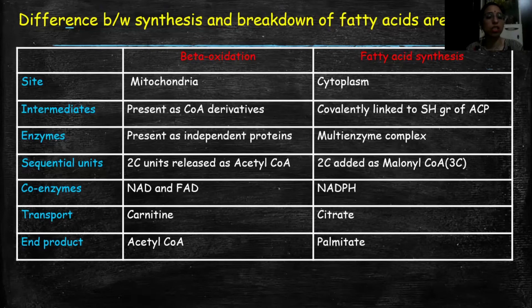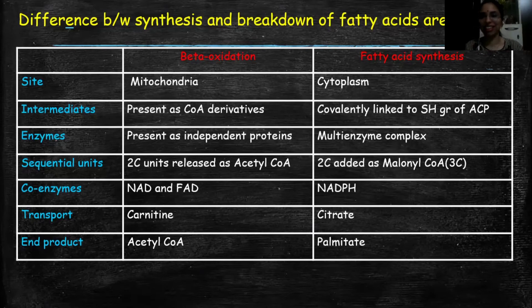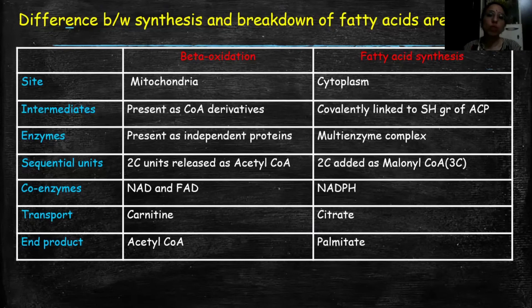In beta-oxidation, intermediates exist as CoA derivatives — CoA as a coenzyme. But in fatty acid synthesis, intermediates are covalently linked to the thiol group of ACP, which stands for Acyl Carrier Protein. All the enzymes used in beta-oxidation are present as independent proteins, whereas fatty acid synthase enzymes are present as a multi-enzyme complex, called fatty acid synthase.